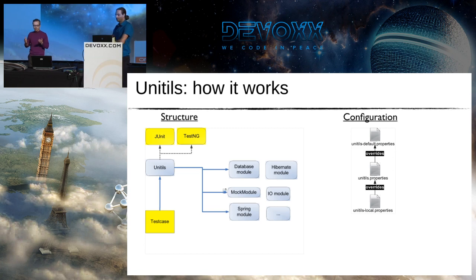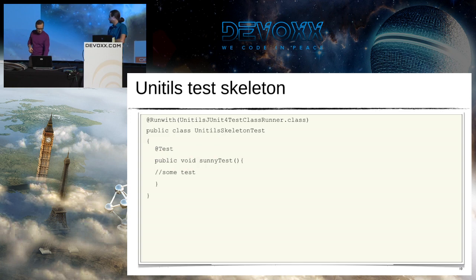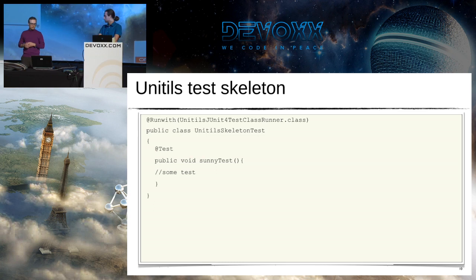Configuration is just property files — everything is overridable in Unitils. The unit test skeleton always looks the same: put the artifact on your classpath, annotate your test with the Unitils runner — here's a JUnit example — and you're good to go.